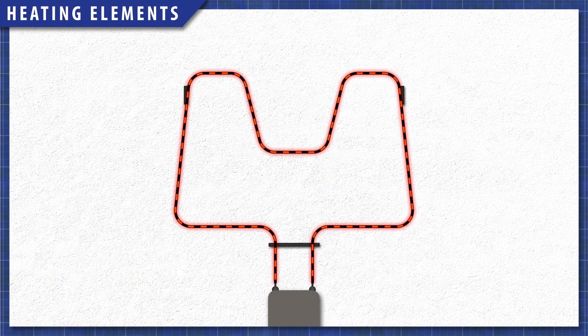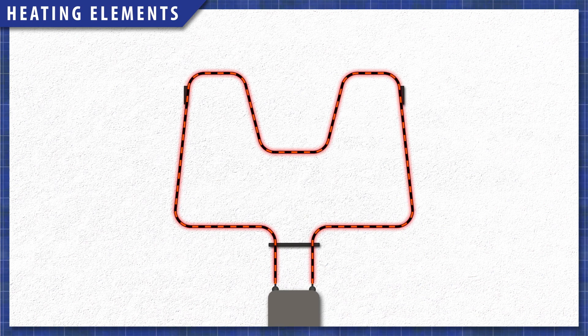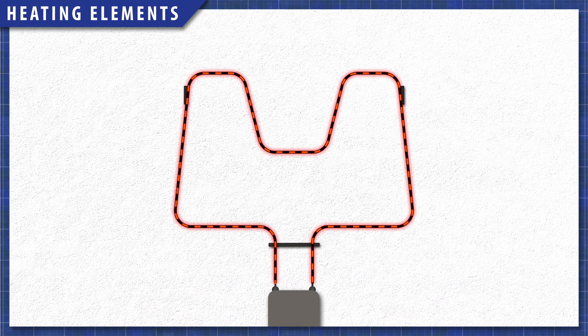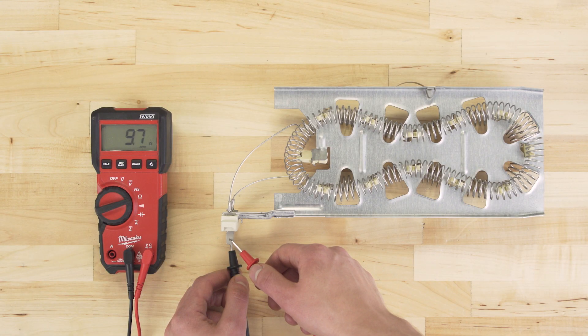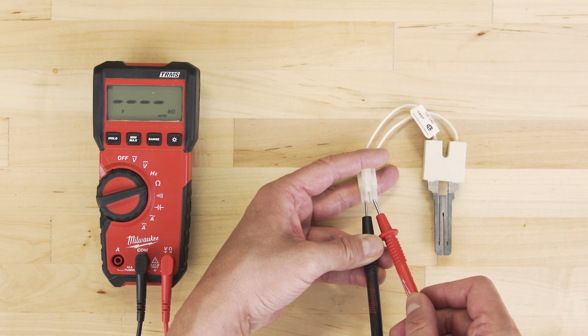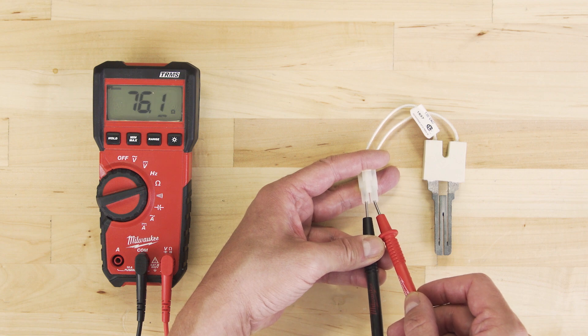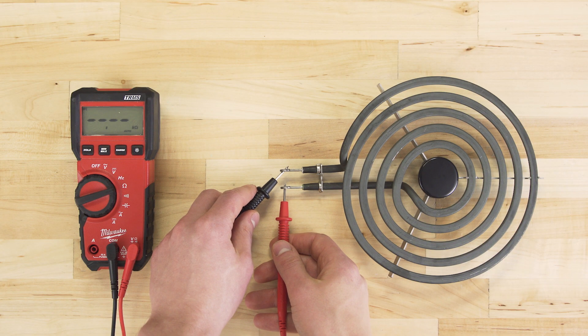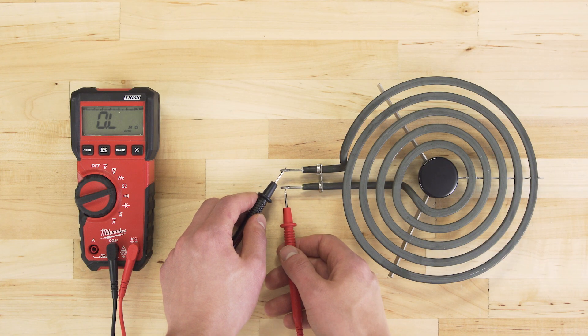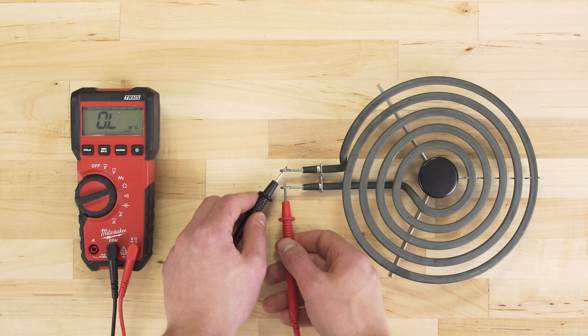Heating elements convert electricity into usable heat by forcing current through a high resistance wire. This includes oven bake elements, stove elements, dryer heating elements, and even hot surface igniters in gas furnaces. If your appliance has power, but isn't heating properly, then check the heating element for continuity. Without a continuous electrical path, there is no resistance and no heat is created.